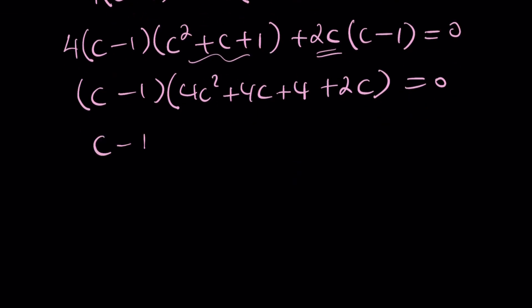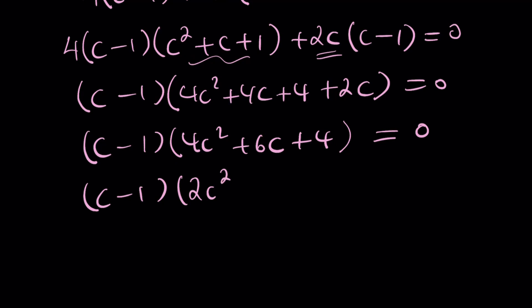Let's take another step here. 4c squared plus 6c plus 4. So far so good. Now we can go ahead and divide both sides by 2 and eliminate the extra factor. So this is going to become 2c squared plus 3c plus 2 equals 0.